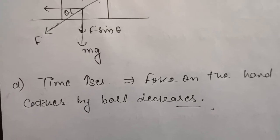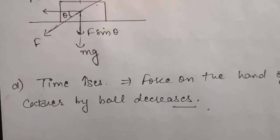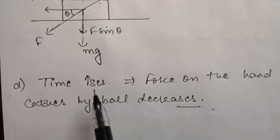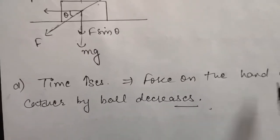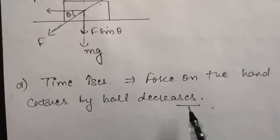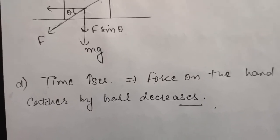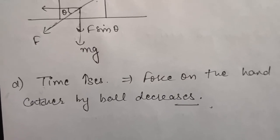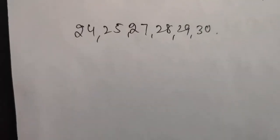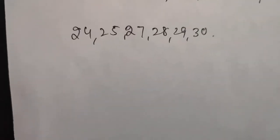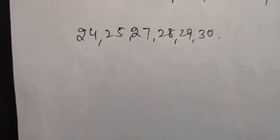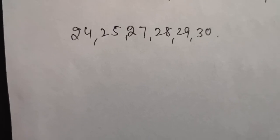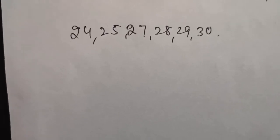Part d: a cricketer moves his hand backwards while taking a catch. By moving his hand backward, he increases the time of impact, which decreases the force exerted on his hand by the ball, preventing injury. After today's lecture, you can attempt questions 24, 25, 27, 28, 29, and 30 from chapter 5 of your NCERT book. Thank you.